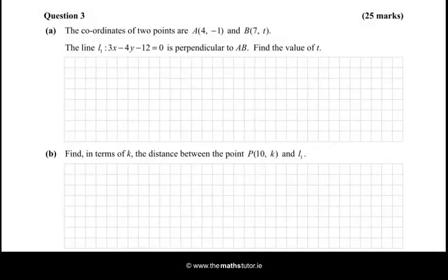Hi there! In this question we're told that the coordinates of two points are A, which is (4, -1), and B, which is (7, t). The line L1, which is 3x - 4y - 12 = 0, is perpendicular to AB. Find the value of t.